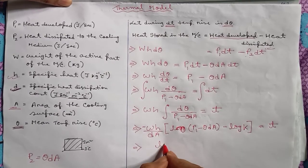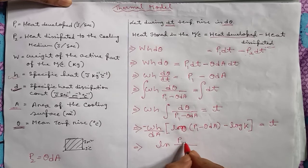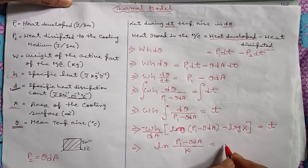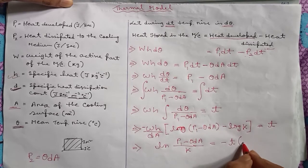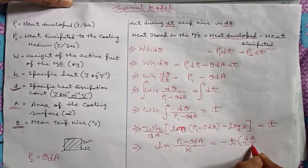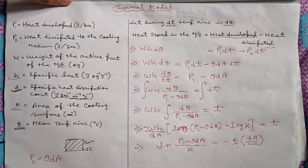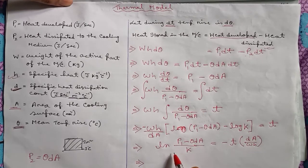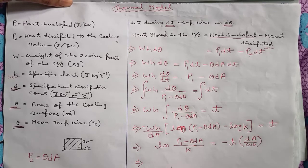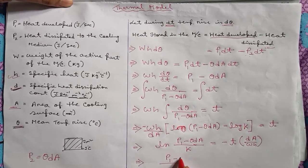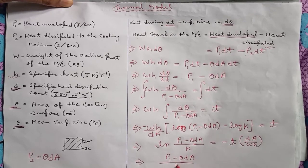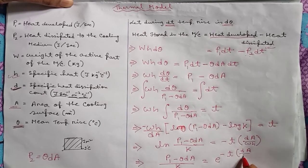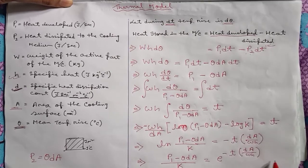Simplifying further: (P1 − θ·DA)/k = e^(−t·DA/WH). I hope up to this everything is clear. If you have any doubt, you can ask me in the comment section.